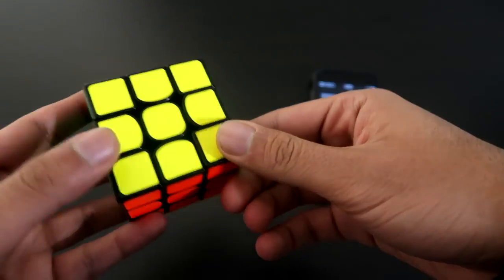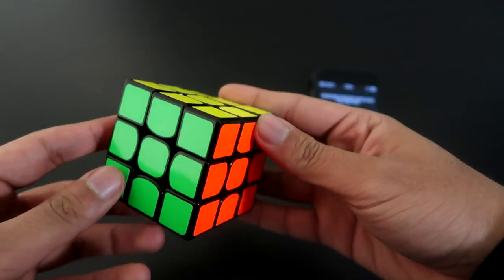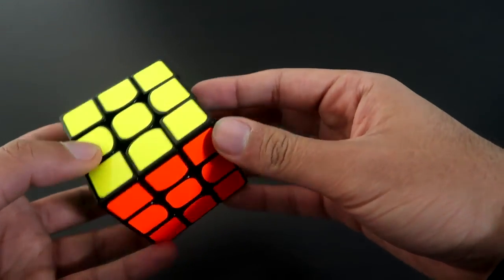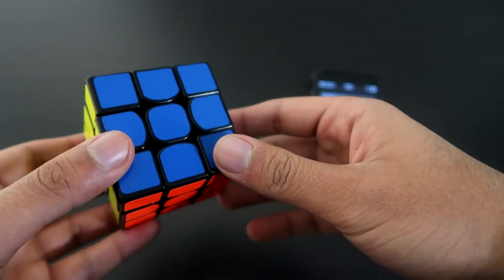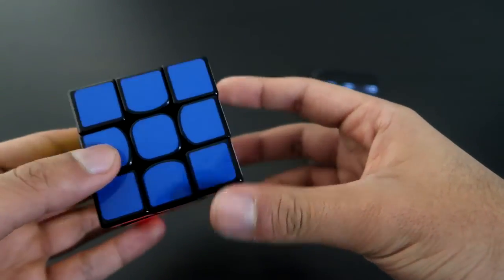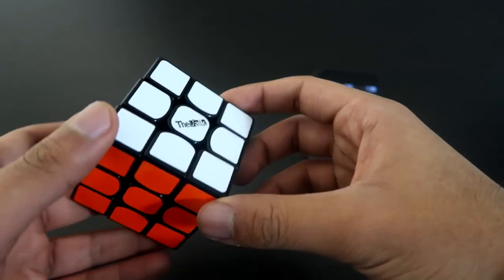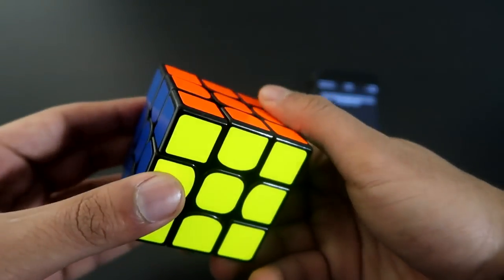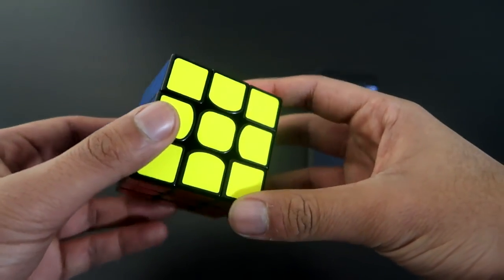Now the way we're going to solve this cube is actually very clever. What we're going to be doing is actually memorizing a very long algorithm to mix up the cube in front of your friends, and then memorize a shorter algorithm to solve the cube when you're actually going to perform it.